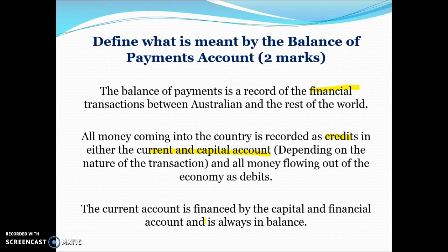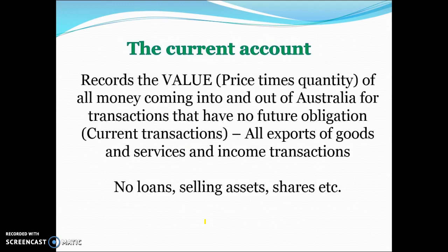Money coming in is credits, money coming out is debits, and the current account is financed by the capital and financial account. The current account records the value of all money coming into and out of Australia for transactions that have no future obligation. This includes all exports of goods and services and income transactions — things like interest, dividends, rents and profits.